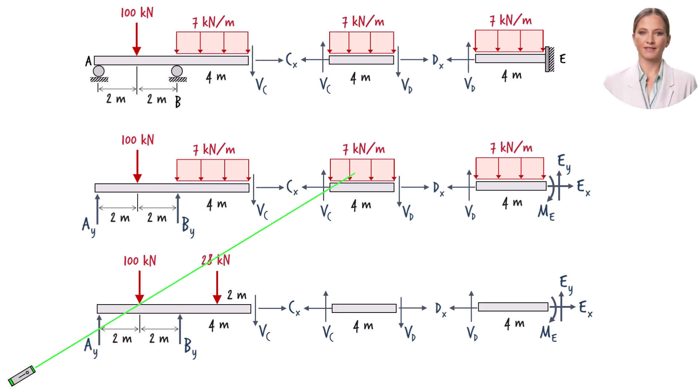Since the area of this rectangle is 28, we replace it with a point load of 28 kilonewtons, placed at the center of rectangle.